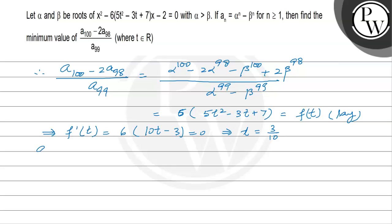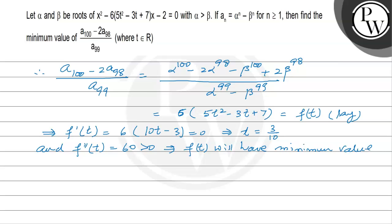Now, f''(t) equals 6 times 10, which is 60, and this is positive. This implies that f(t) will have a minimum value at t equal to 3 over 10.